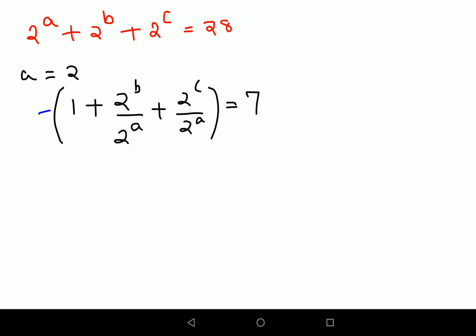Next, what you need to do is you will subtract both sides by 1, means you will keep shifting the numbers as and when you get it. And instead of 2 raised to a, we'll write 2 raised to 2, which is 4.